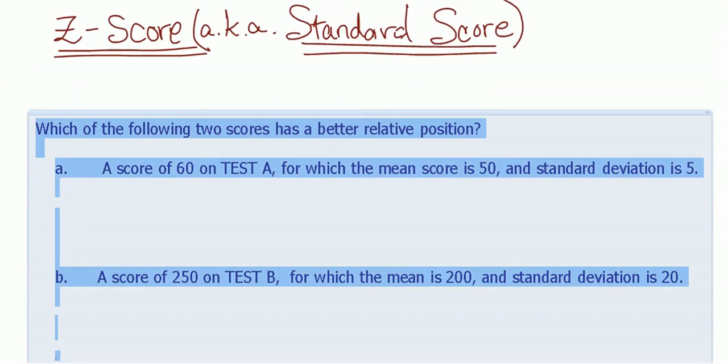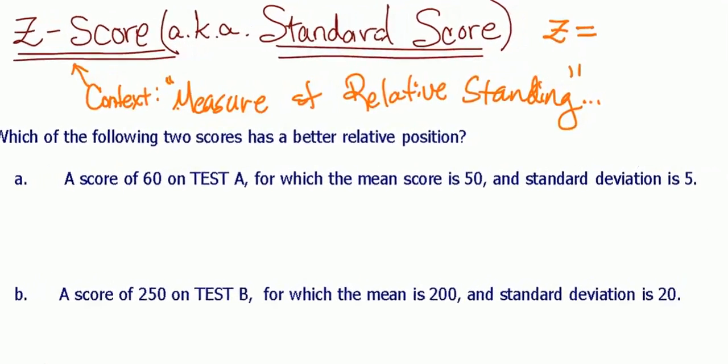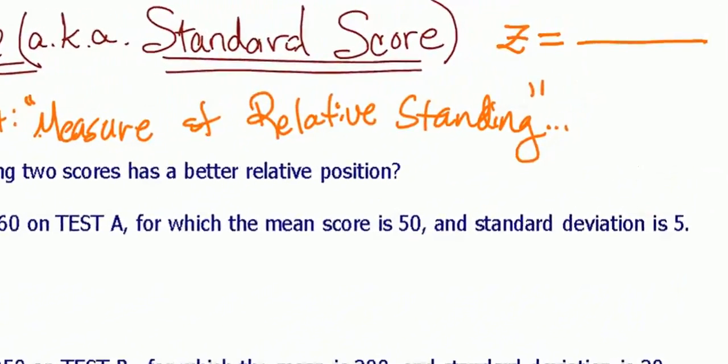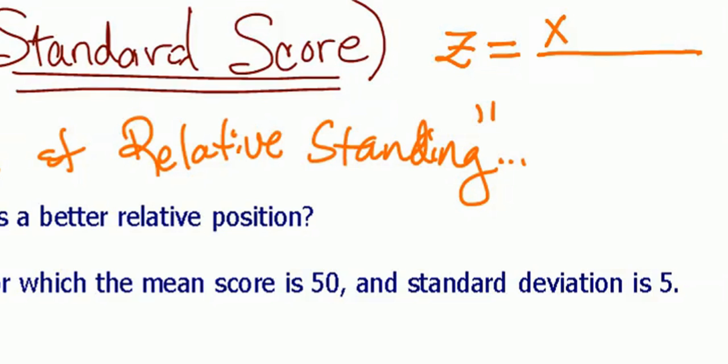In this problem we're going to take a look at the z-score. There's two ways you could use the z-score formula. Now this example is going to give us a measure of relative standing. The formula looks like this. I'm sure you guys have it probably written in your book. We take our raw score that we're interested in comparing, we're going to subtract the mean and divide that by the standard deviation.